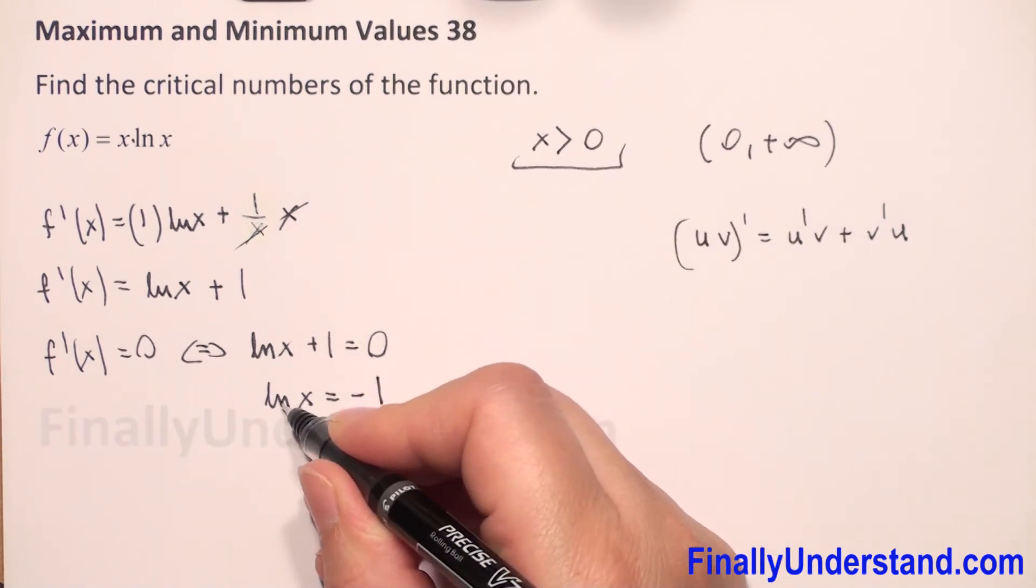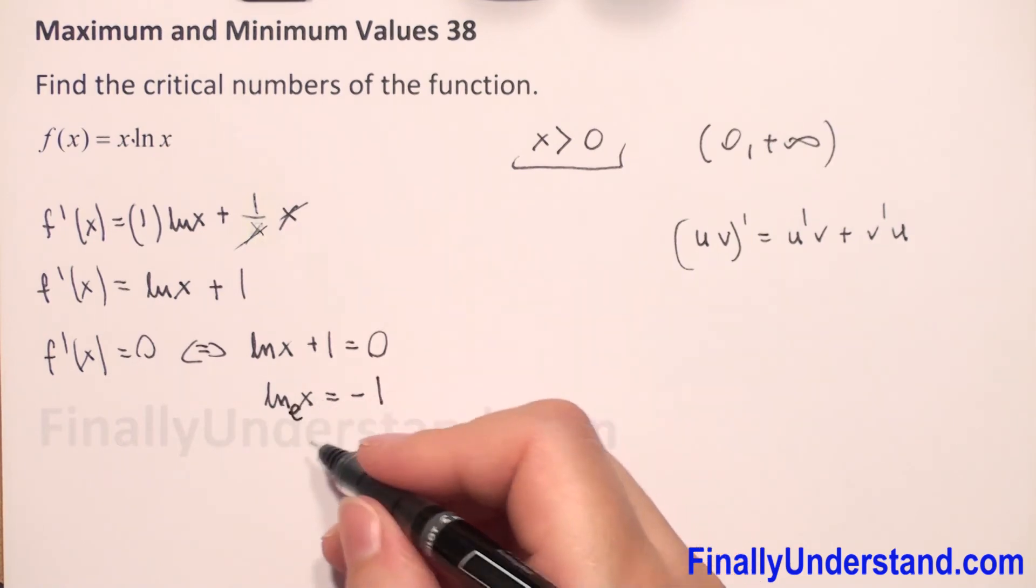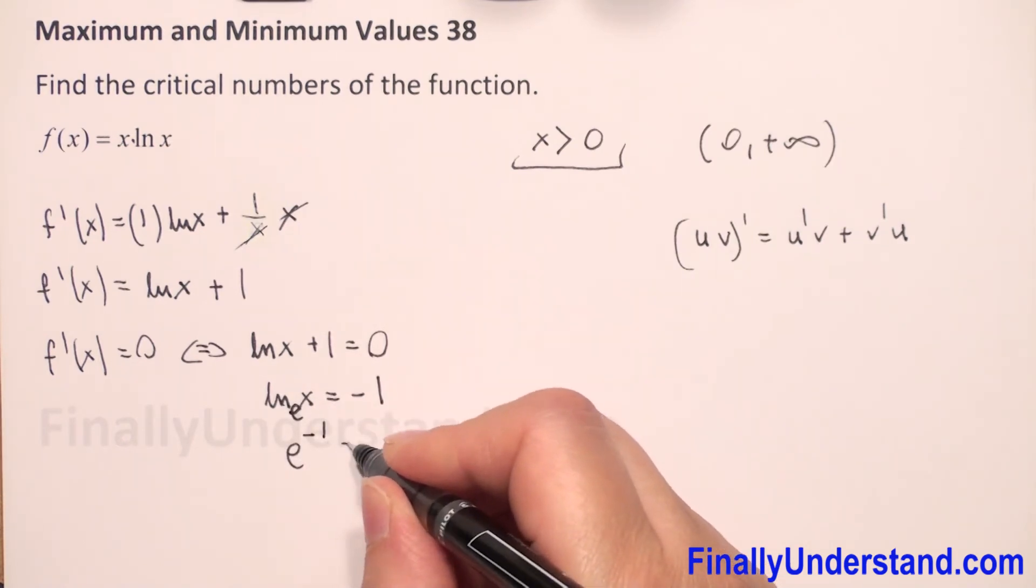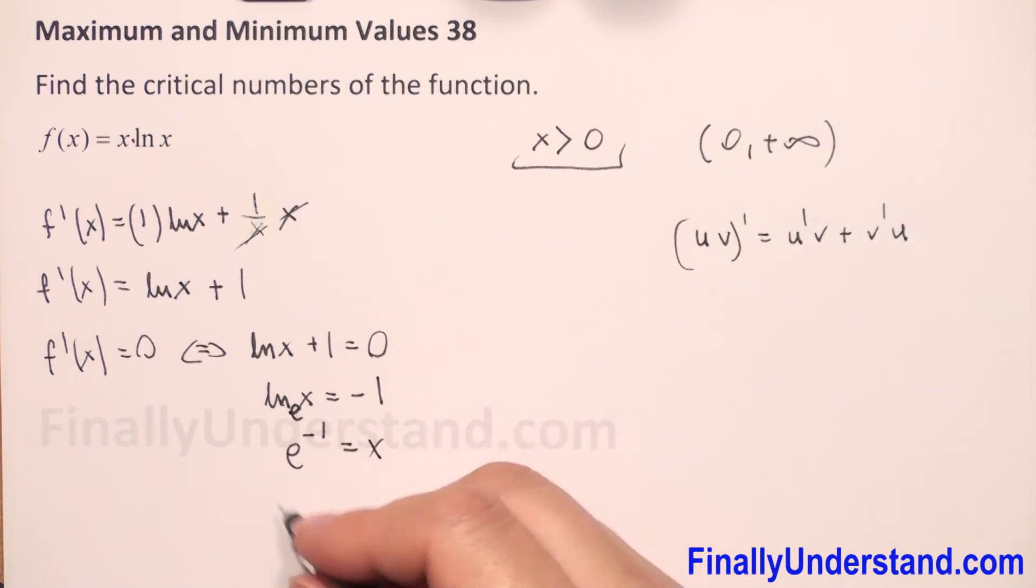We have e to the power negative 1 is equal to x. We can change the signs. x is equal to 1 over e. This is our solution for our equation.